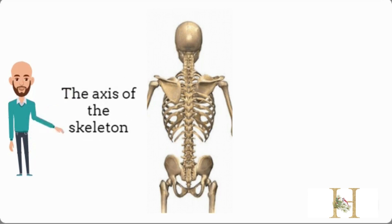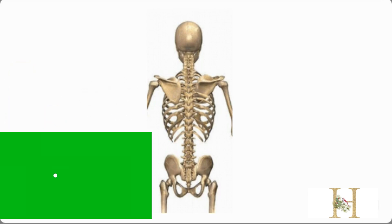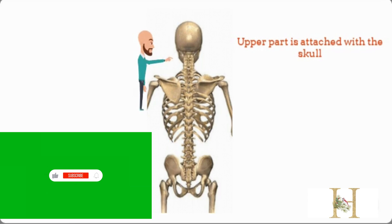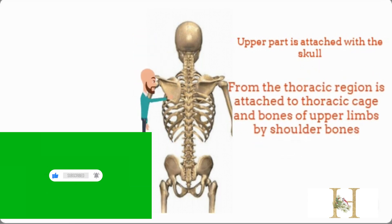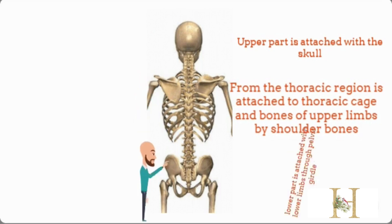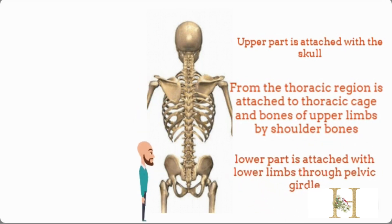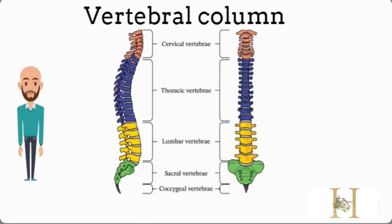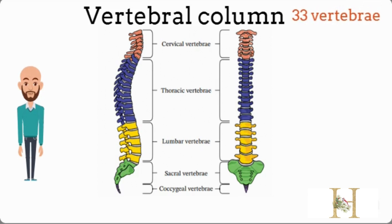Let's move to the vertebral column. The vertebral column is the axis of the skeleton. Its upper part is attached with the skull. At the thoracic region it is attached with the thoracic cage and two upper limbs by shoulder bones, while its lower part is attached with the two lower limbs by the pelvic girdle.